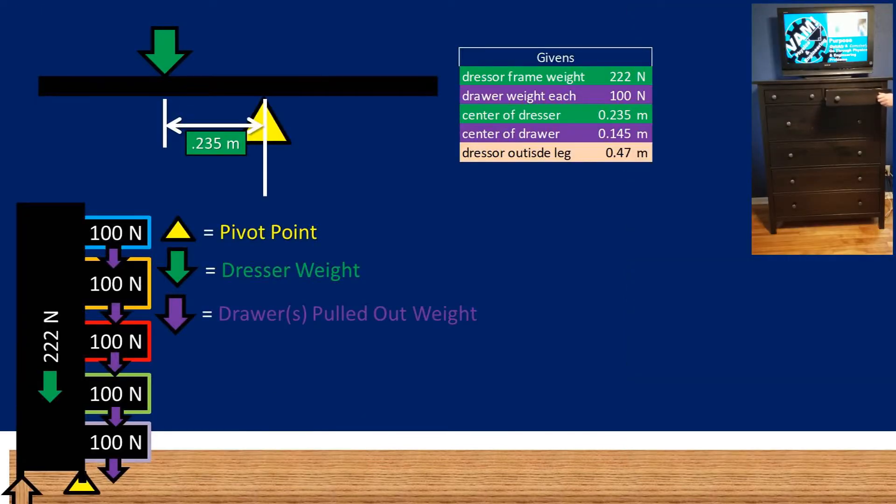In this problem, we have a dresser that has a frame weight or body weight of 222 newtons. And this dresser's frame's center of mass is at 0.235 meters from the pivot point.